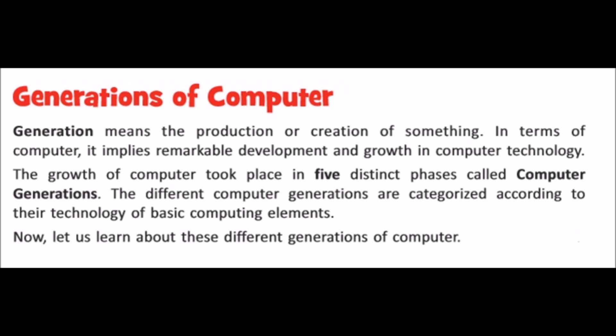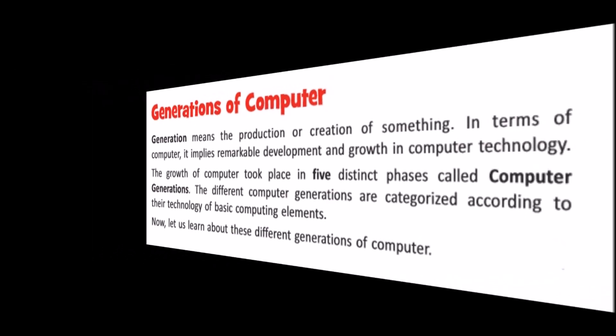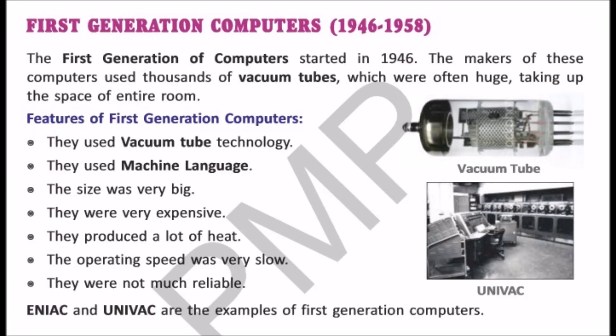The first generation computers used vacuum tubes as processors. They were quite expensive, and their speeds were very slow. They were not much reliable and produced lots of heat. They used machine language, and ENIAC and UNIVAC were examples of those first generation computers.